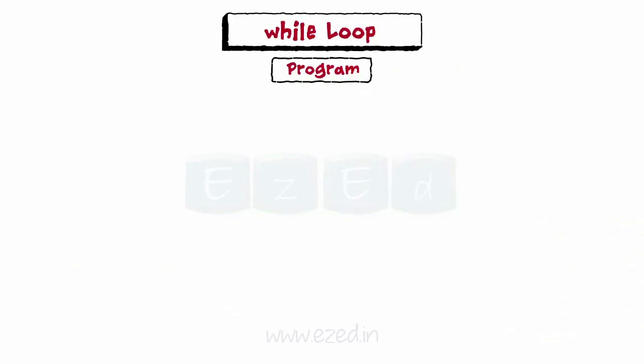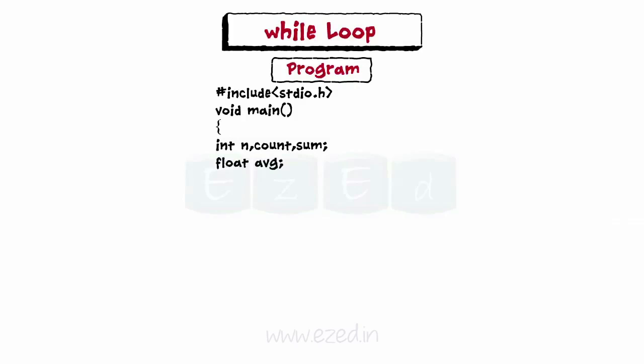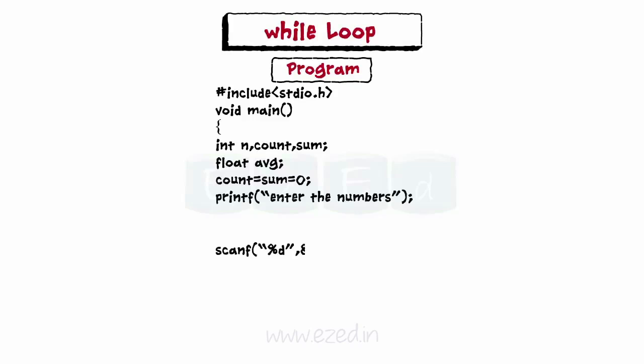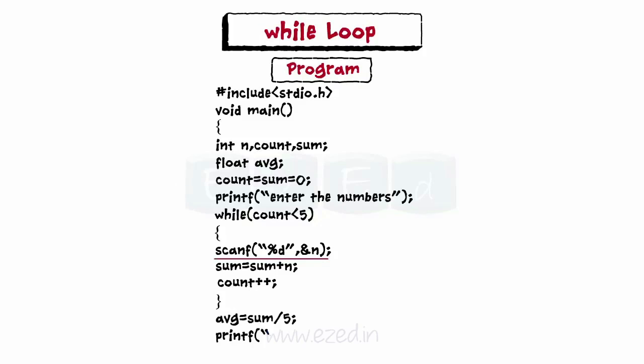Now let's write a program illustrating the use of while loop. This program finds the average of 5 numbers. Let's declare the main function and the variables: n, which stores the numbers; sum, which is used to maintain the summation; and count, which is used as the counter variable. Counter count is initialized to zero. Ask the user to enter the numbers and store each value in the variable n. We use a while loop here to scan 5 consecutive values. Add the number to the value stored in sum, increment the counter, find the average, and finally print the average.